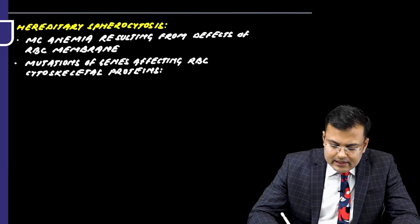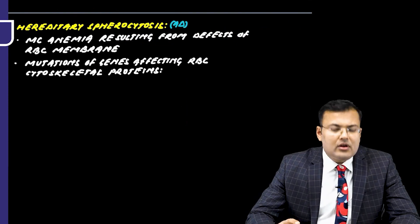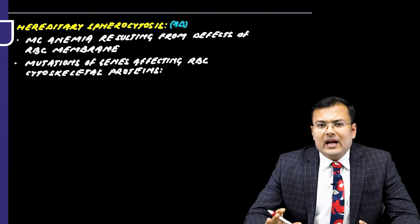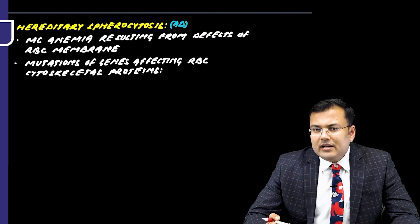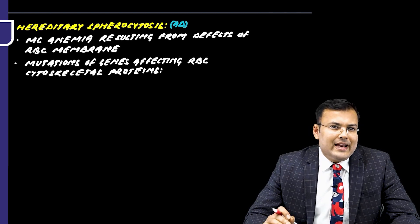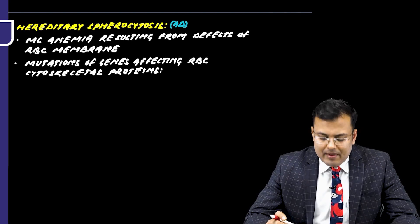Hereditary Spherocytosis is an autosomal dominant condition and it is the most common anemia resulting from a defect of the RBC membrane.